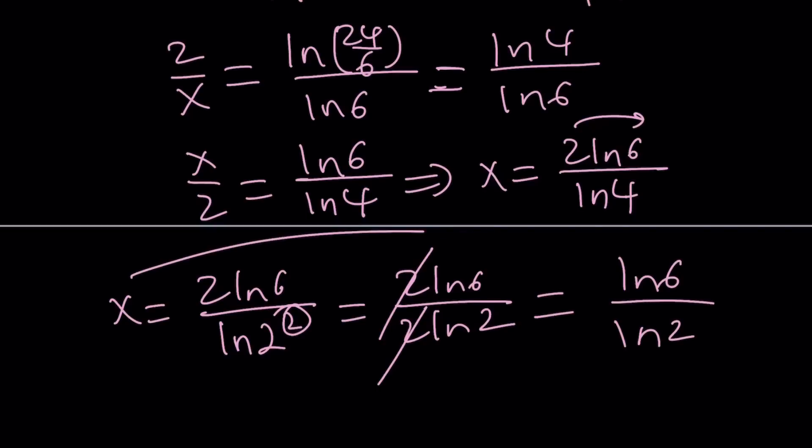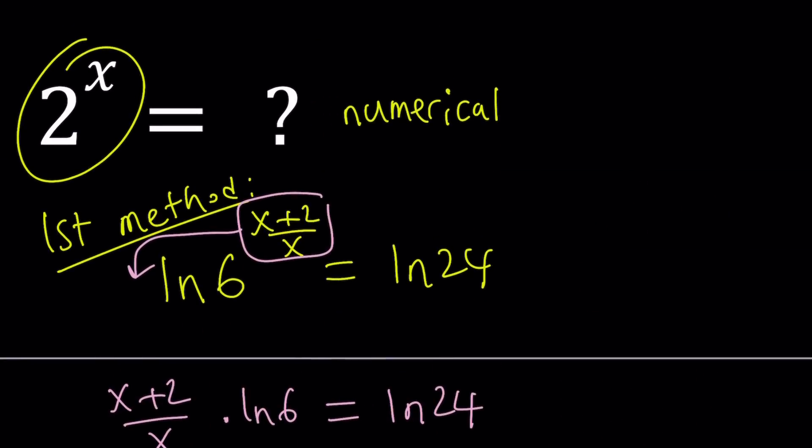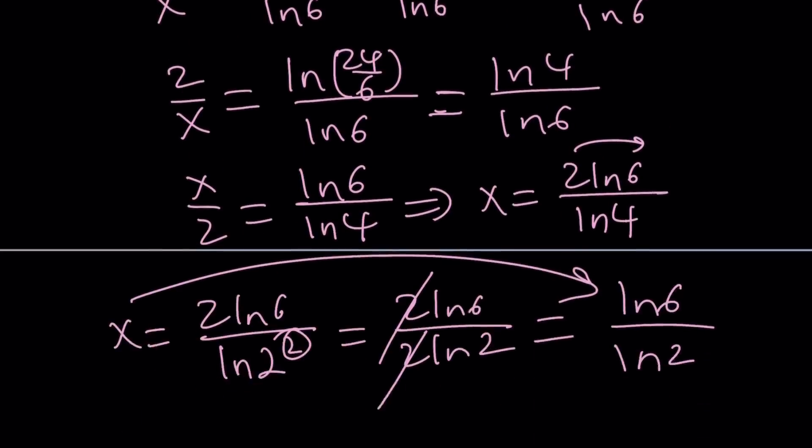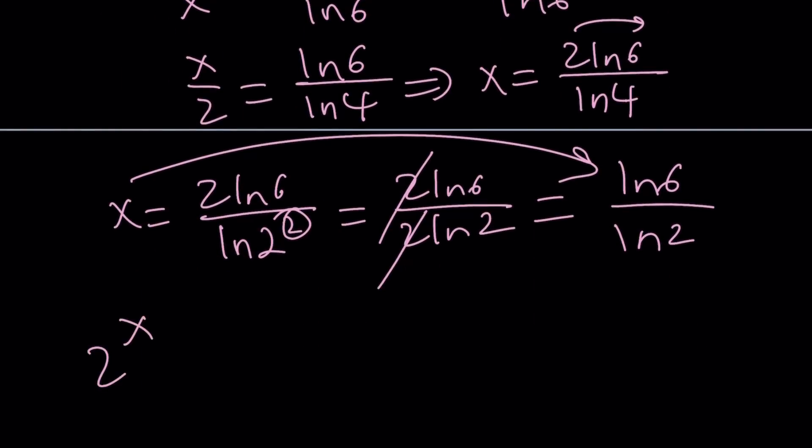So that's x. But we weren't looking for x. What are we looking for? We're looking for 2 to the power of x. Well, this is good enough, but I don't need x. I need 2 to the power of x. So just replace x with what it is, ln 6 over ln 2. At this point you might be wondering, how on earth am I going to simplify this?